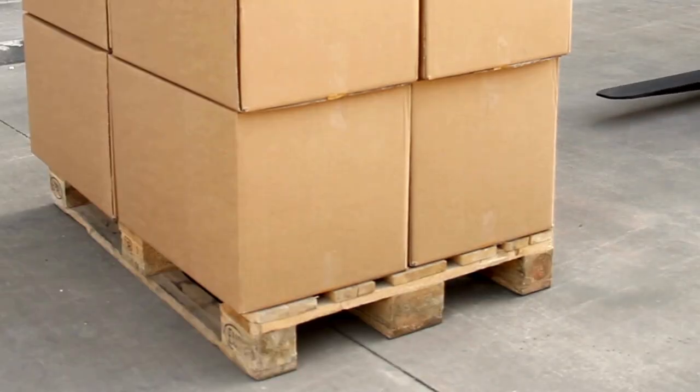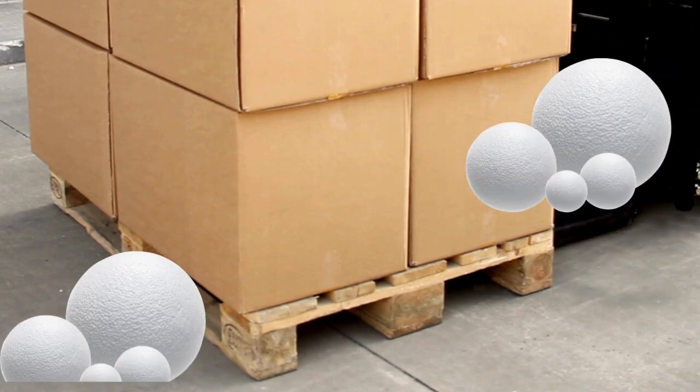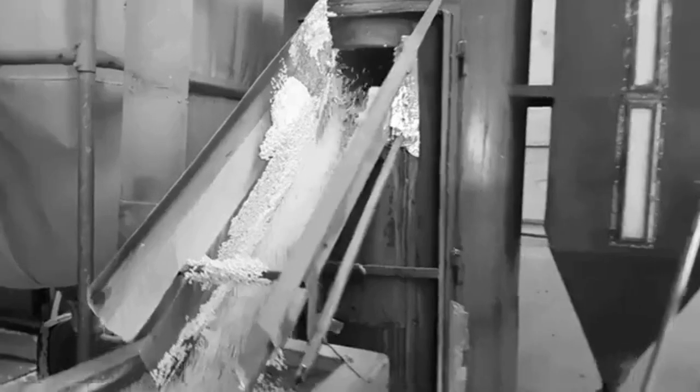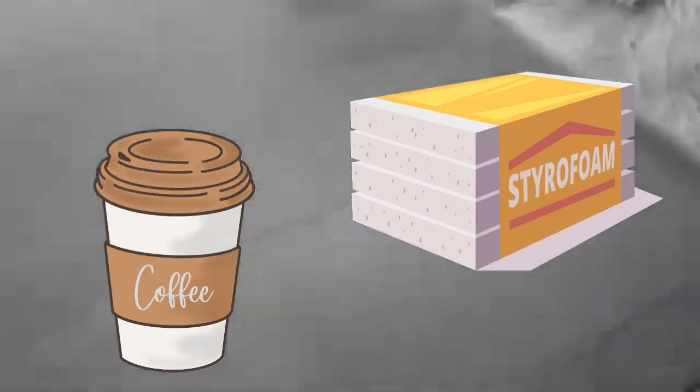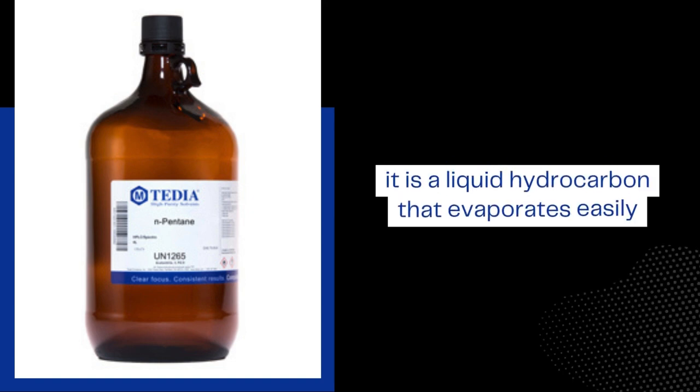The polystyrene resin arrives at manufacturing facilities in small, bead-like pellets, usually called pucks. These pellets can be processed in various ways depending on the intended product, whether it's a disposable coffee cup or building insulation. To transform the rigid polystyrene into lightweight foam, manufacturers add an expanding agent — for example, pentane, a liquid hydrocarbon that evaporates easily. This agent is mixed with the polystyrene pellets during manufacturing, and when heated, the pentane vaporizes, causing each tiny bead to puff up like a balloon, giving styrofoam its airy structure.